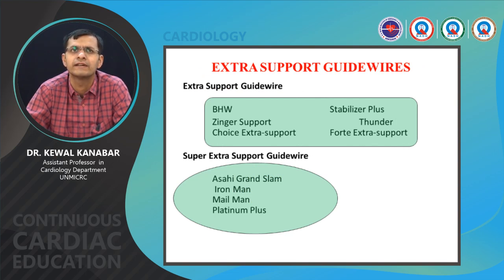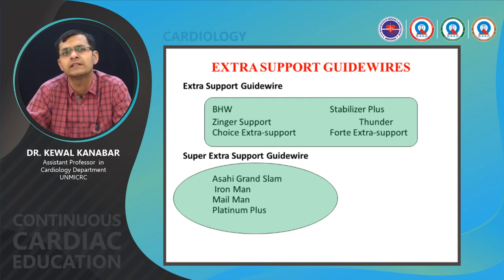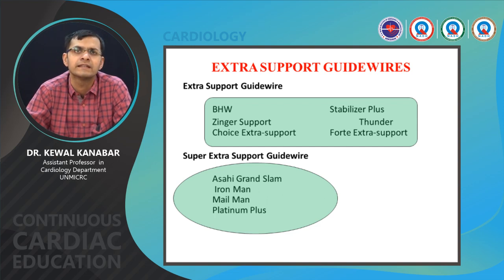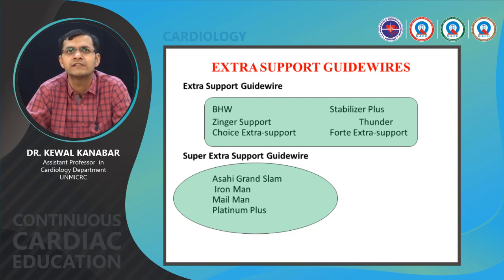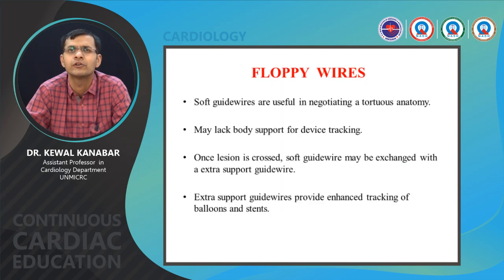Extra support guide wires include Balanced Extra Support, Choice PT Extra Support, Stabilizer Plus, and Whisper Extra Support. For very tortuous and calcified lesions, super extra support wires like the Grand Slam wire and Iron Man wire are used when extra support wires also do not work. These have a high tip load and are usually used as buddy wires in extremely tortuous and calcified vessels.